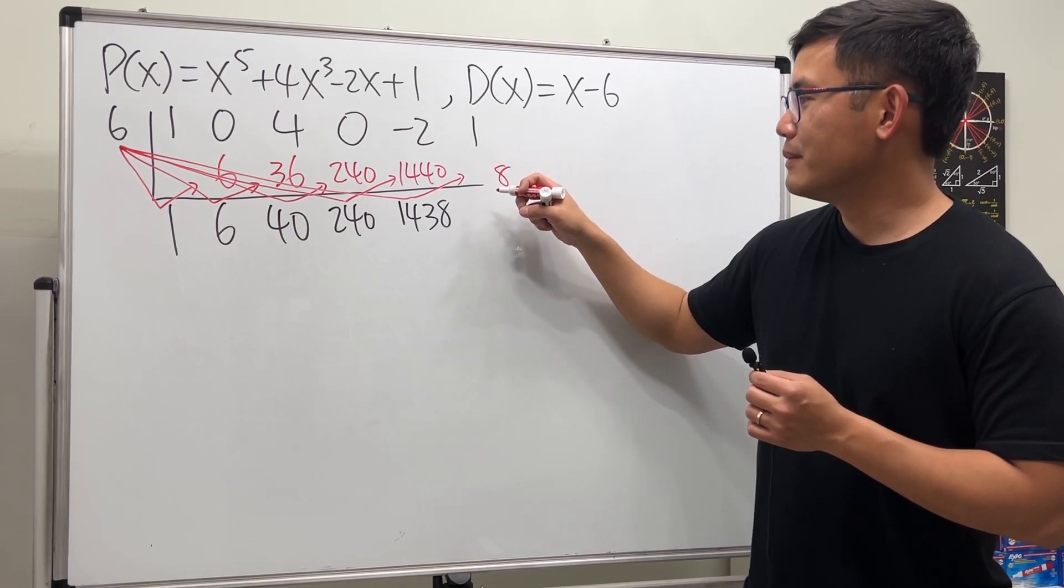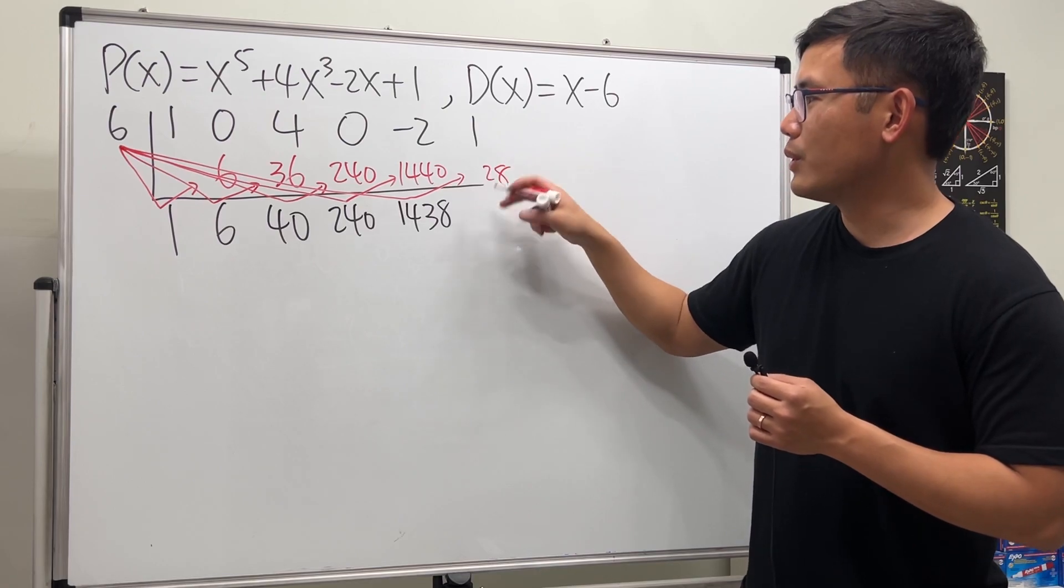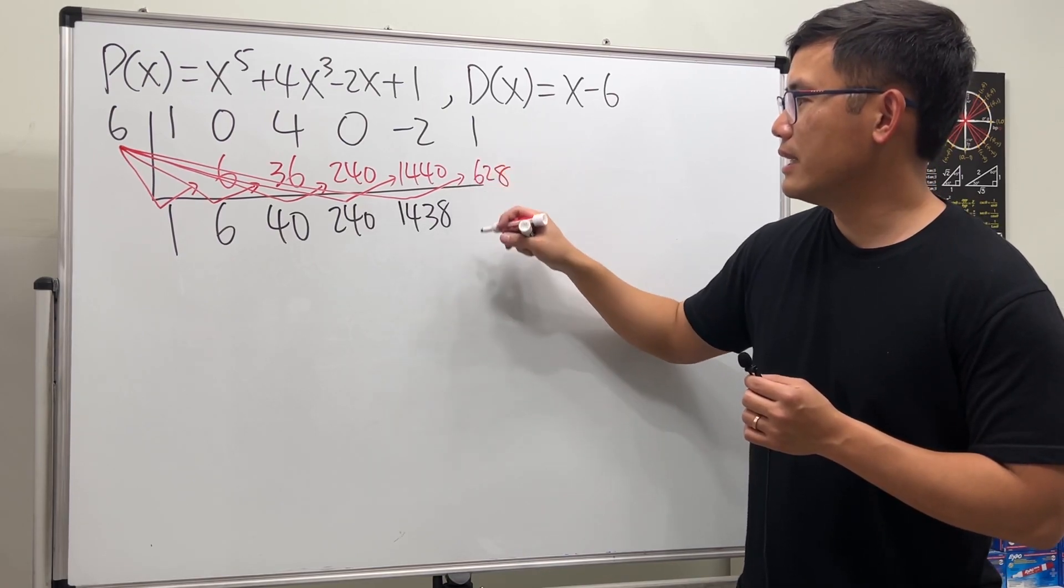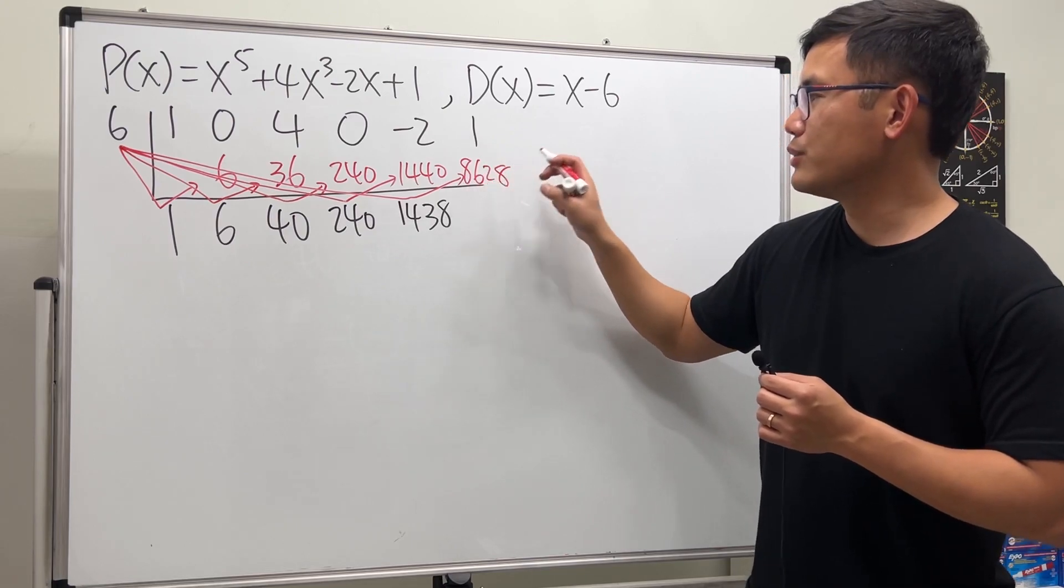18, and then 4 is 2 with the 2 over, and then 6 and then 2, so it's 8628.